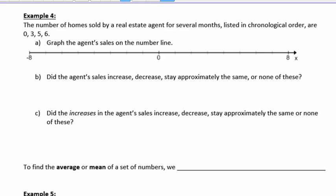Example 4. The number of homes sold by a real estate agent for several months listed in chronological order are 0, 3, 5, and 6. Graph those values, the agent's sales, on the number line.